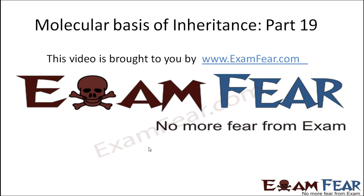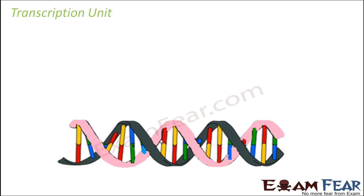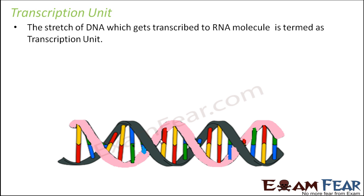This video on molecular basis of inheritance part 19 is brought to you by examfear.com. We will now talk about the transcription unit — where exactly in a DNA the process of transcription takes place. It is not that the entire DNA gets transcribed into RNA; it is just a portion of DNA where one strand acts as a template to generate a portion of RNA. That portion of DNA is known as the transcription unit — the stretch of DNA which gets transcribed to an RNA molecule.